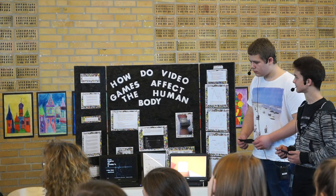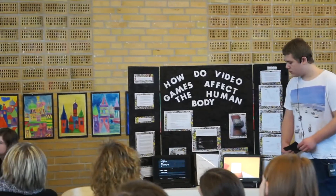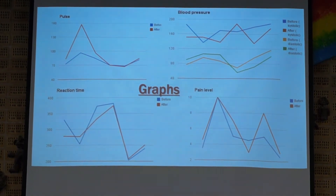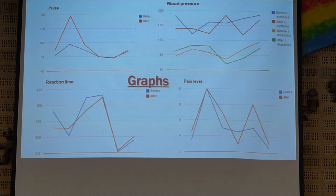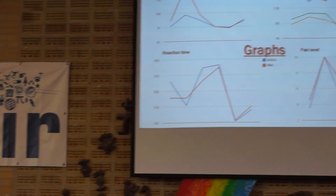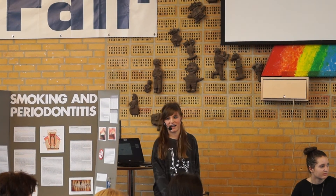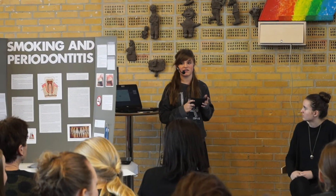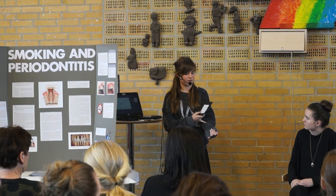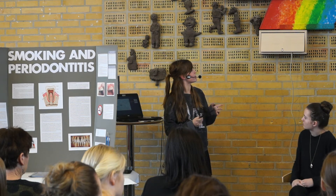The last graph is the pain level — pain tolerance, whatever you want to call it — and we want to inform you it's not very precise either. We tried our best. We did this by taking a toothpick and slightly poking the test subject while playing and after playing to see their reaction. We also used a 1-to-10 scale for the test subjects so we could see if the poking was done at the same level each time to make it more precise.